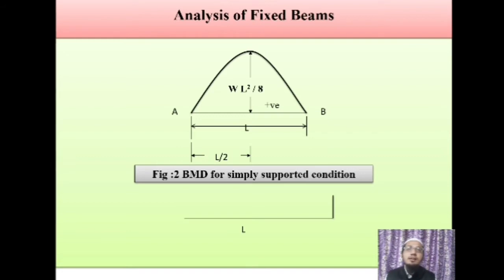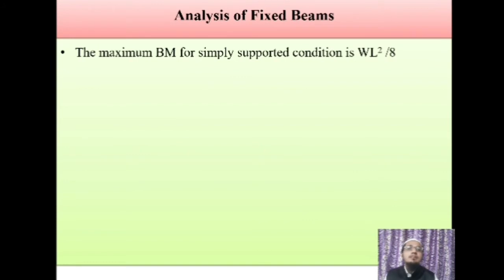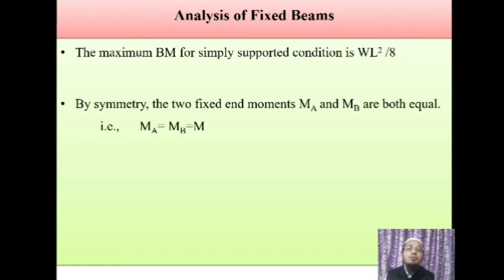The fixed beam is split into two parts: first part under the external loading, second part subjected only to end moments. In this case, UDL is provided over the entire span and due to symmetry, the moment will be the same at both supports. For the simply supported beam subjected to only end moments, MA and MB will be equal, forming a rectangular diagram — a negative bending moment diagram. So MA = MB = M due to symmetry.